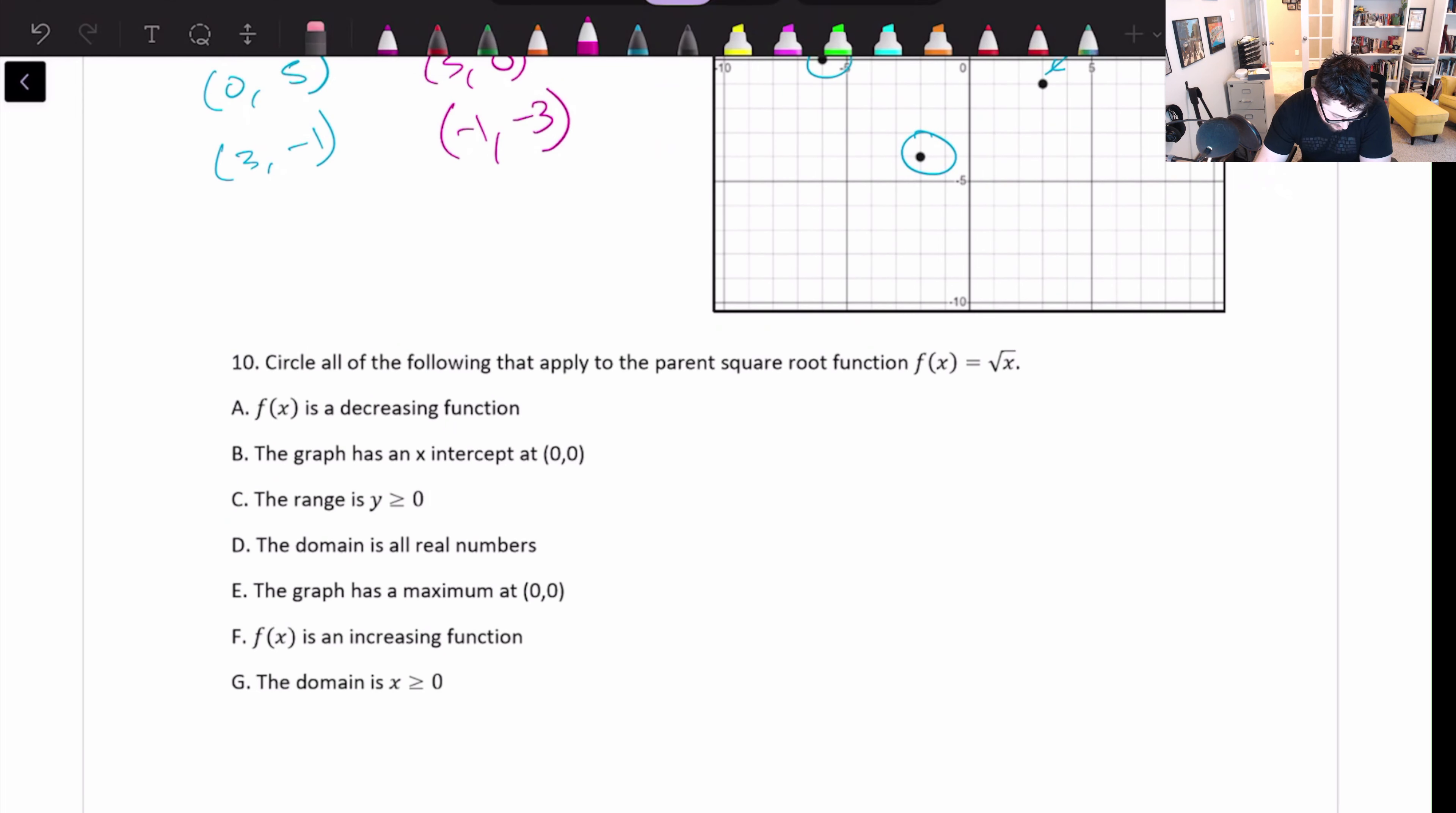So circle all the following that apply to the square root function. So to clarify, this square root function is the parent function. So it's starting at 0, 0. It's going up and to the right. That's what the graph looks like. So as we go to the right, x increases. As x increases, y increases. So it is not a decreasing function. It's an increasing one. The graph has an x intercept at 0, 0. Yeah. It touches the x axis exactly there. Cool. Let me follow the instructions and circle. The range is greater than or equal to 0. Yeah, that's true. Our y values start at 0 and they go up from there. So that works.